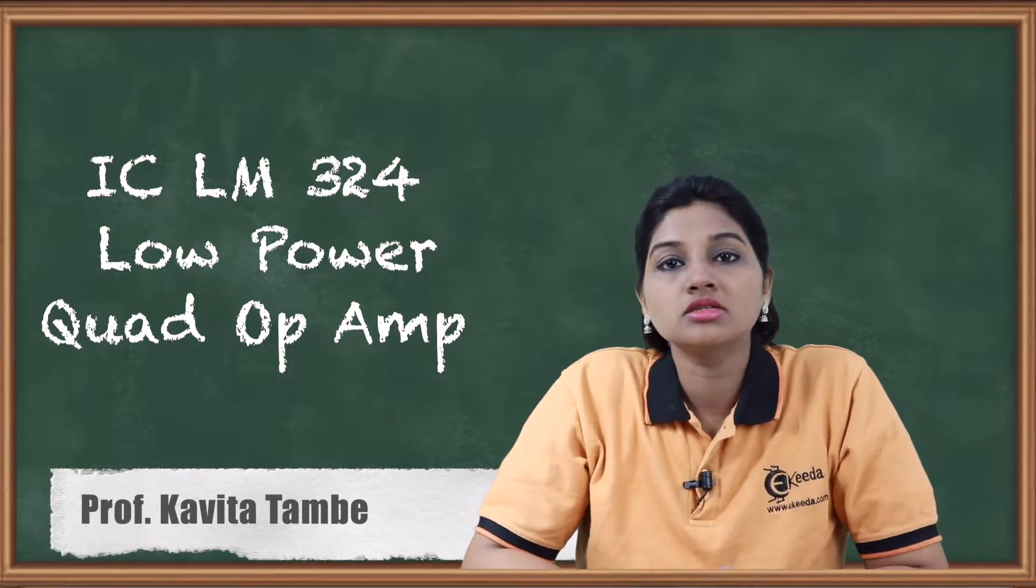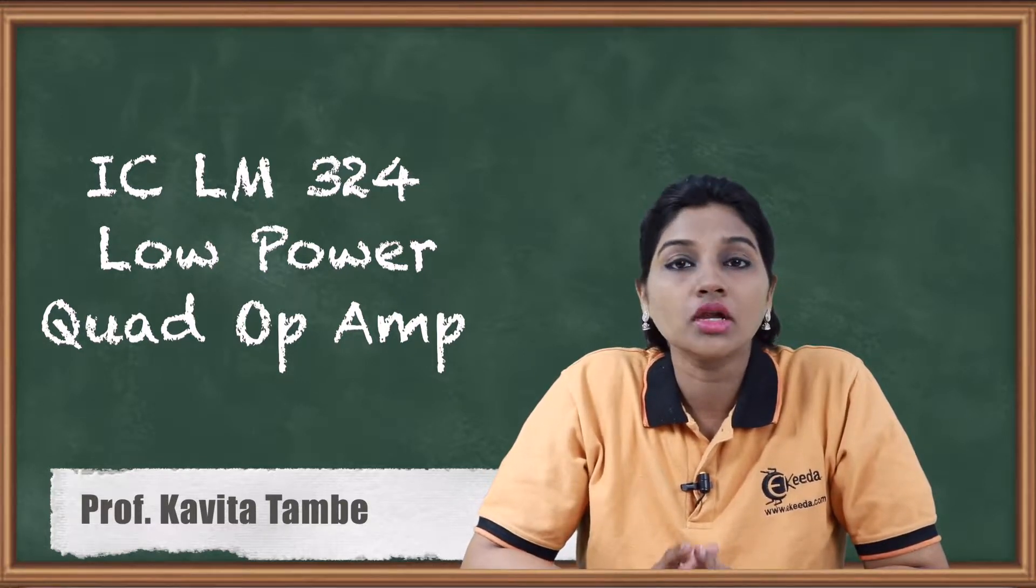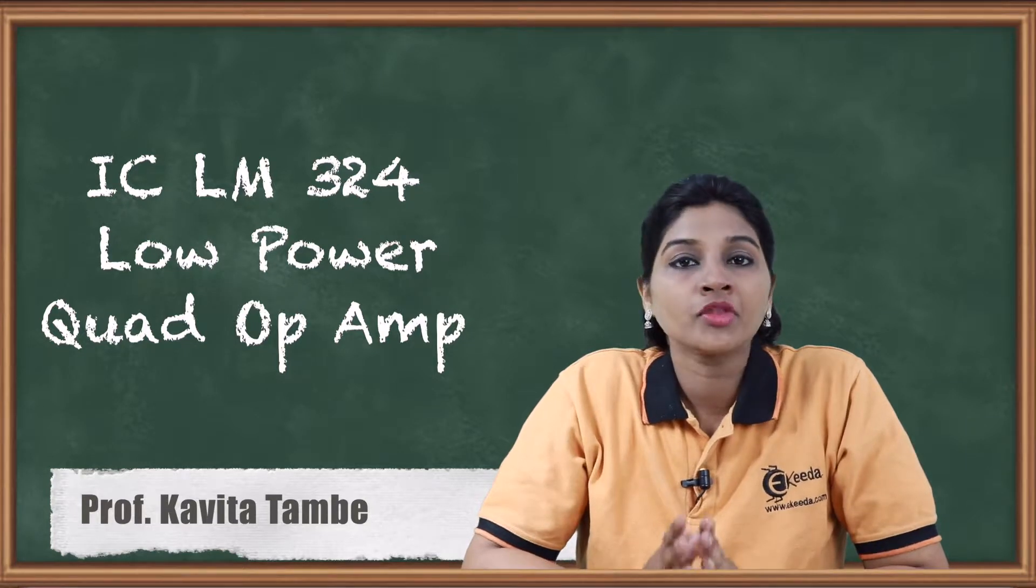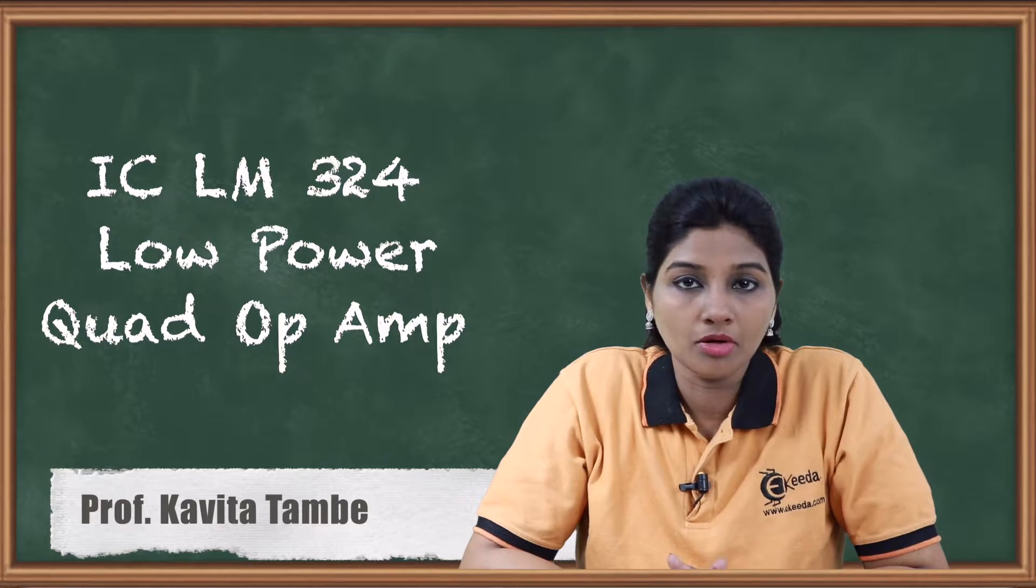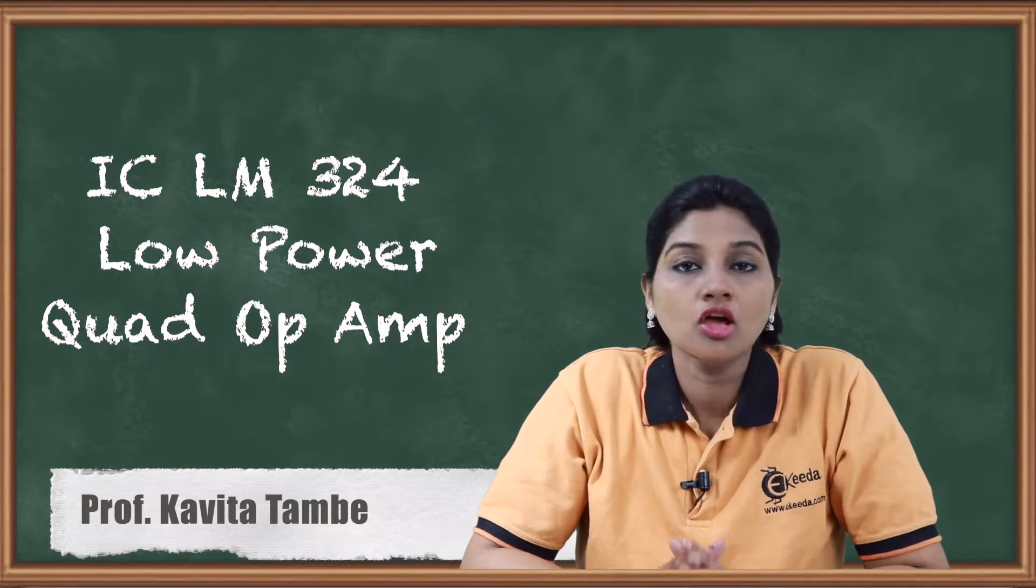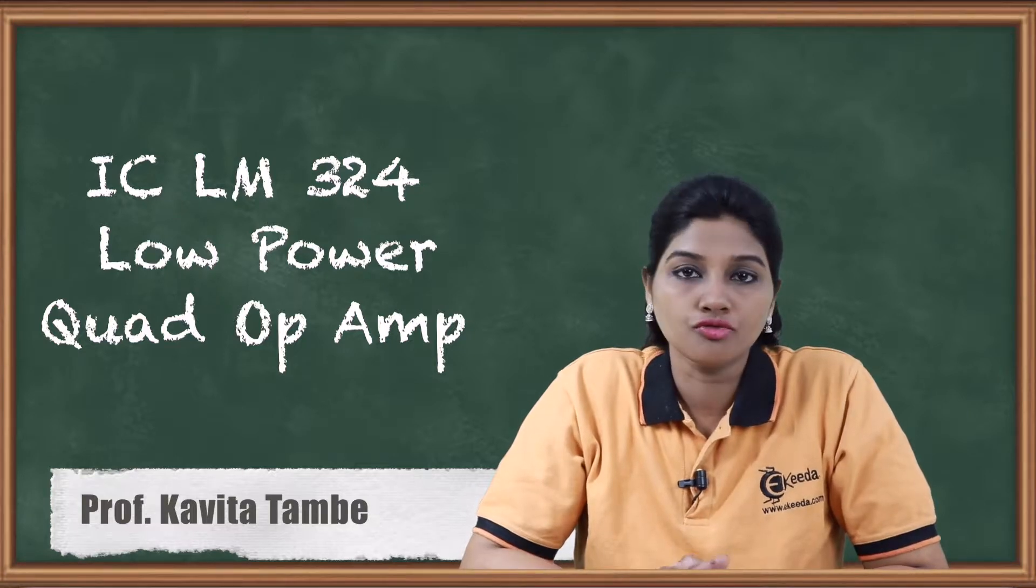As its name indicates, the Low Power Quad Operational Amplifier that is IC LM324 consists of four independent operational amplifiers. It operates on single power supply as well as dual power supply. So let's see first the pin diagram and internal diagram of LM324.